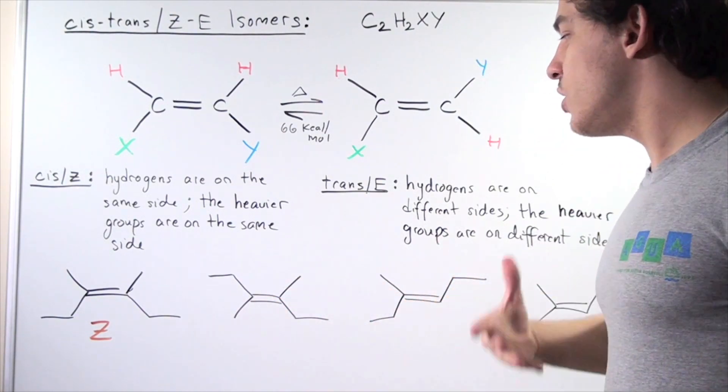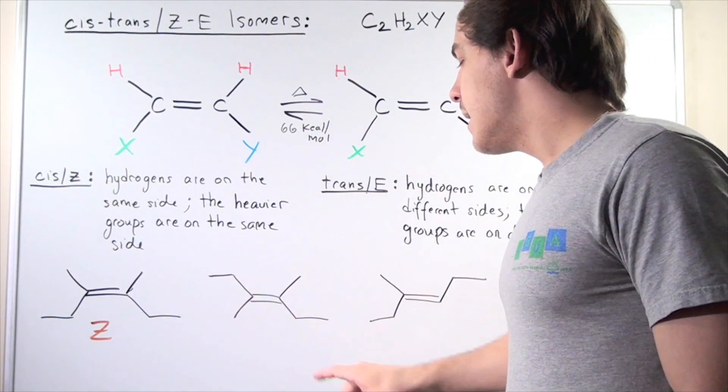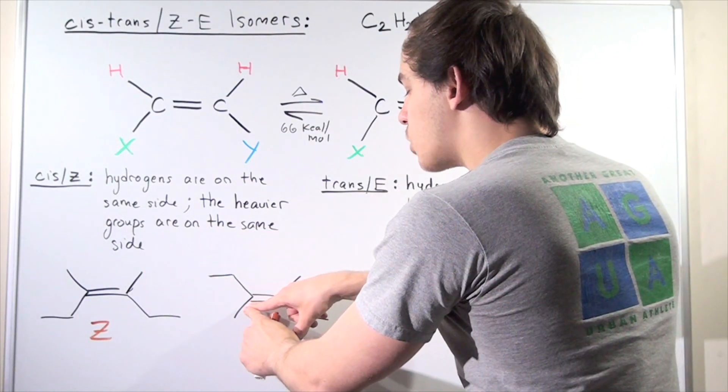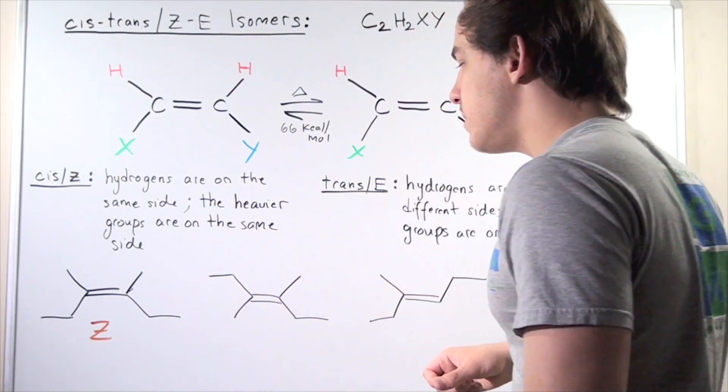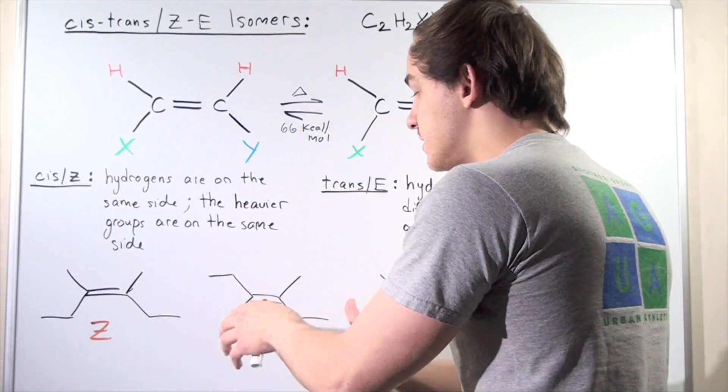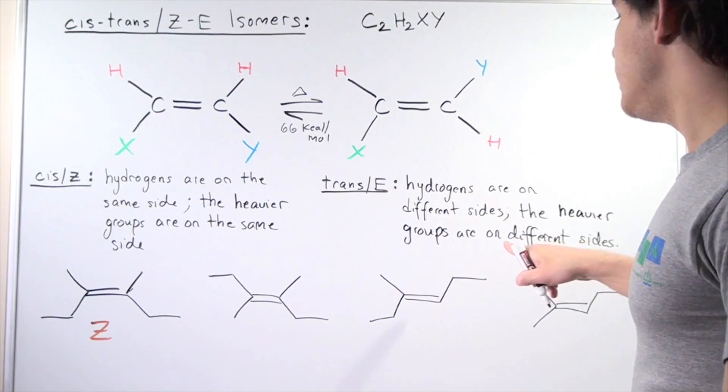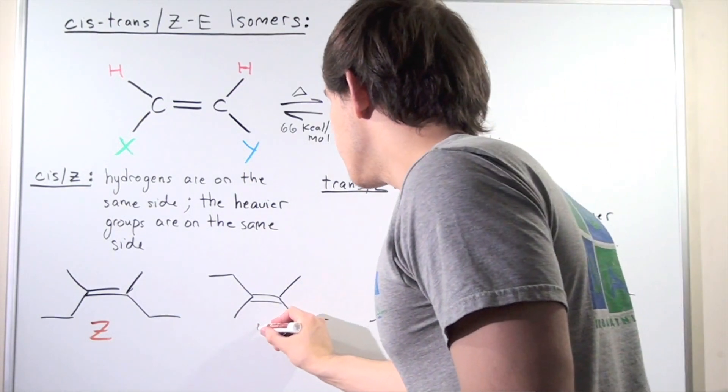So what about this guy? Here we also have methyl and ethyl, but the ethyl groups are on different sides, and the methyl groups are on the same sides. So that means the lighter are on the same sides, the heavier are on different sides. So that means we must have our E. So this is E.